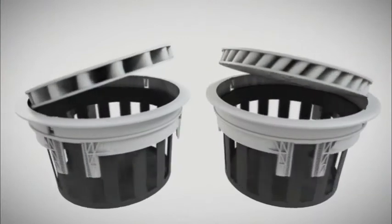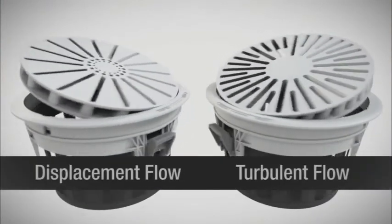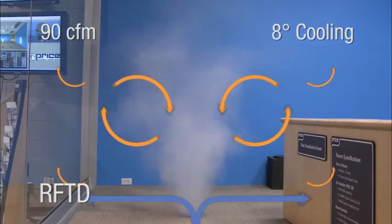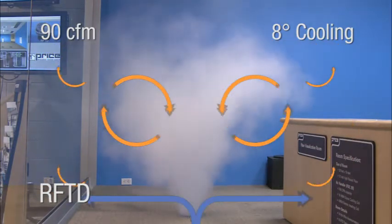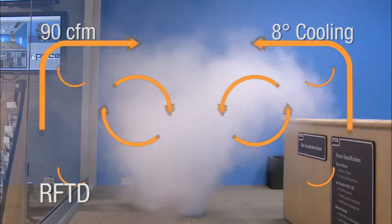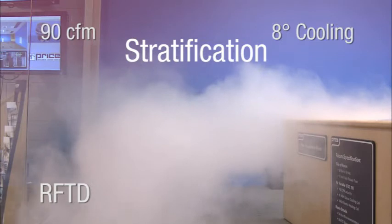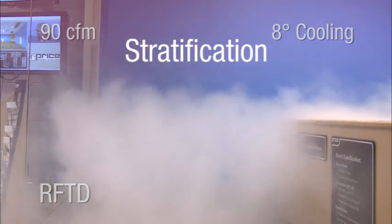Price offers two kinds of UFAD diffusers: turbulent flow and displacement flow. Turbulent flow diffusers discharge room air at around 400 to 800 feet per minute in a swirling air pattern that rapidly induces room air. This leads to room air that is mixed in the occupied zone — the first 6 feet from the floor. A stratification layer is formed at this point, leading heat and pollutants to collect at high levels above the occupied zone.